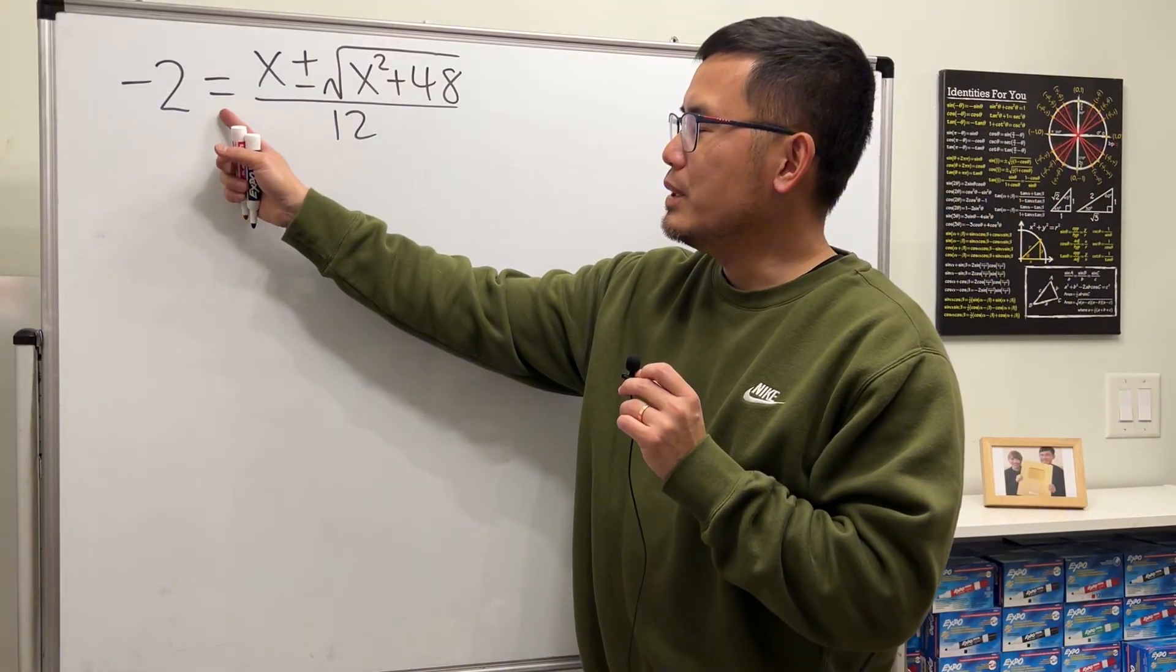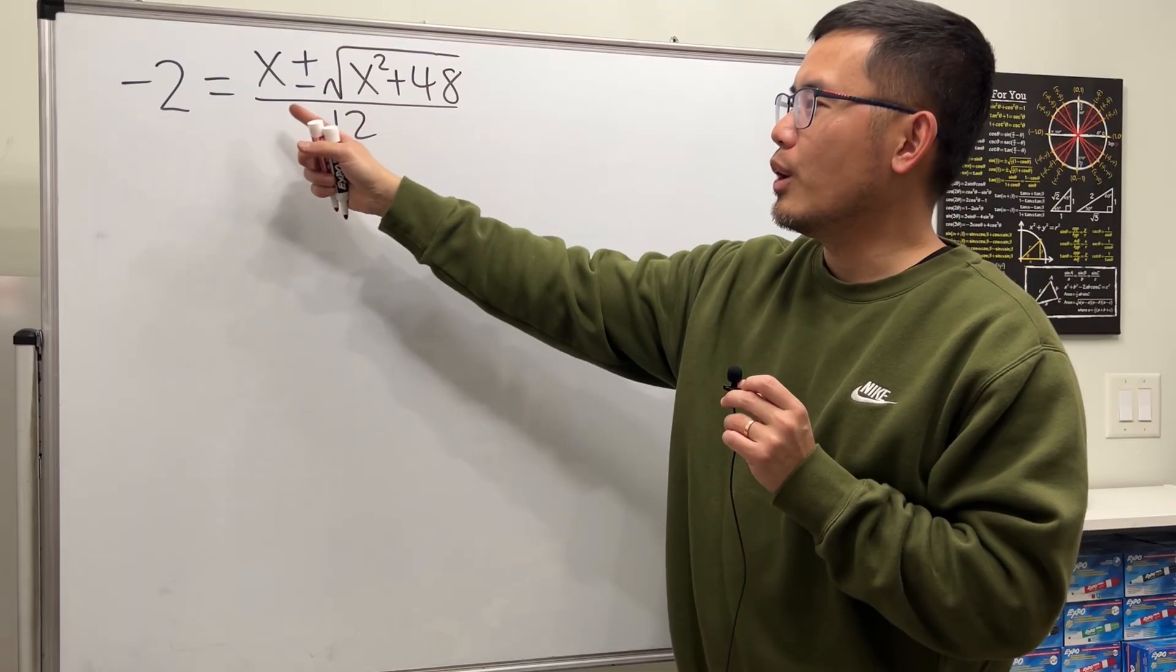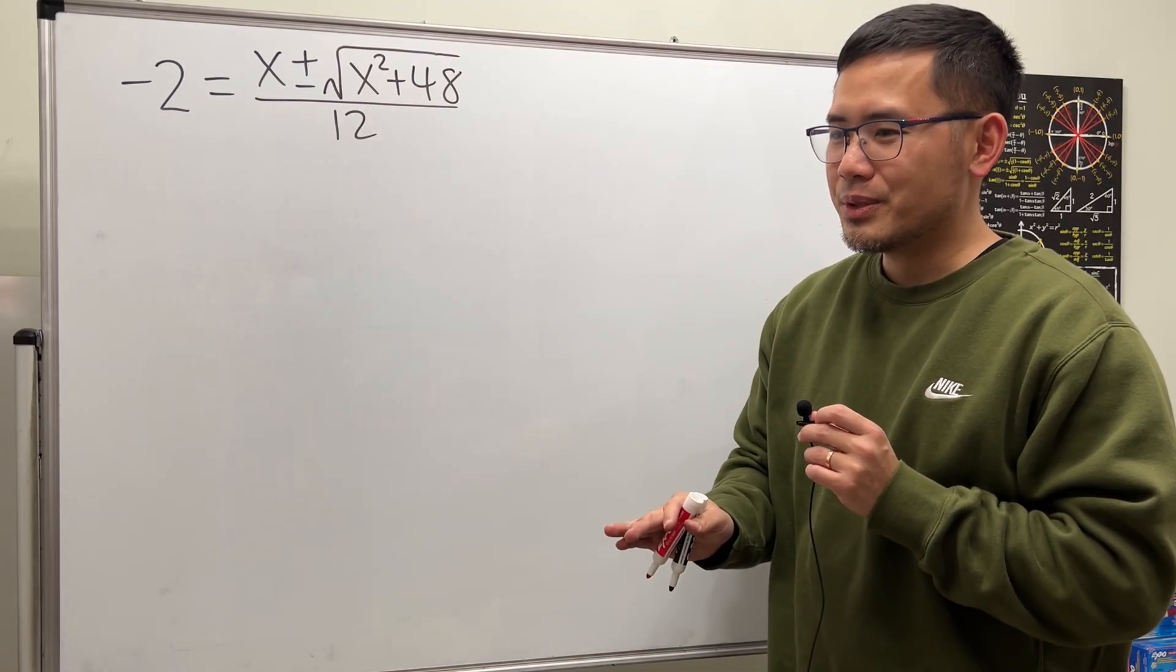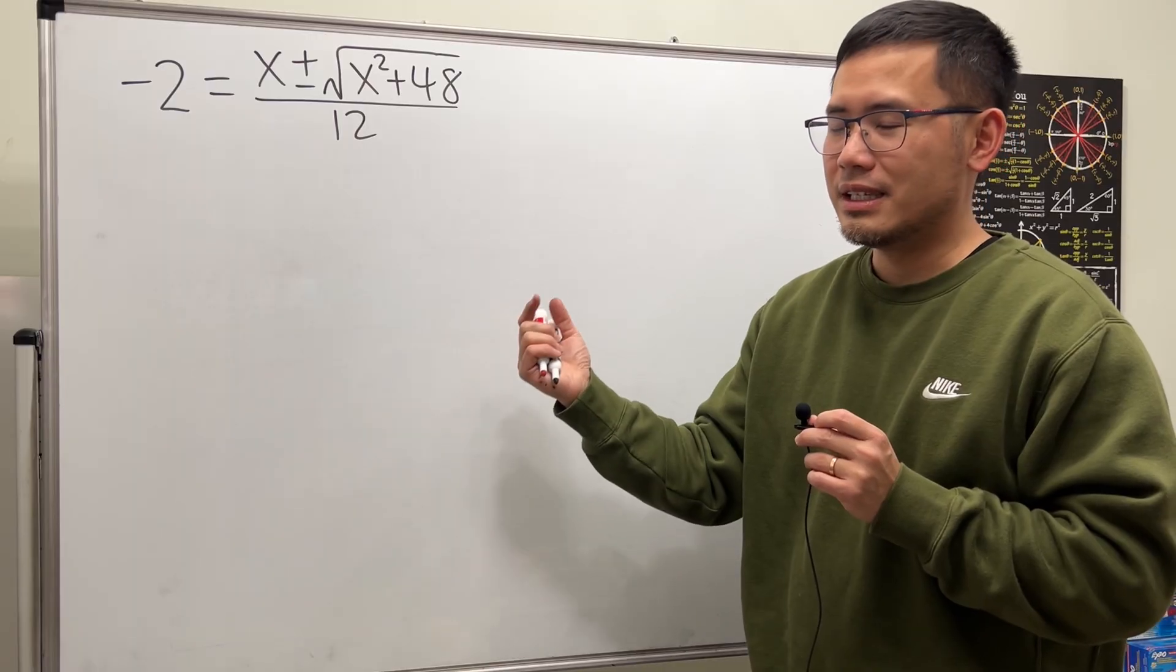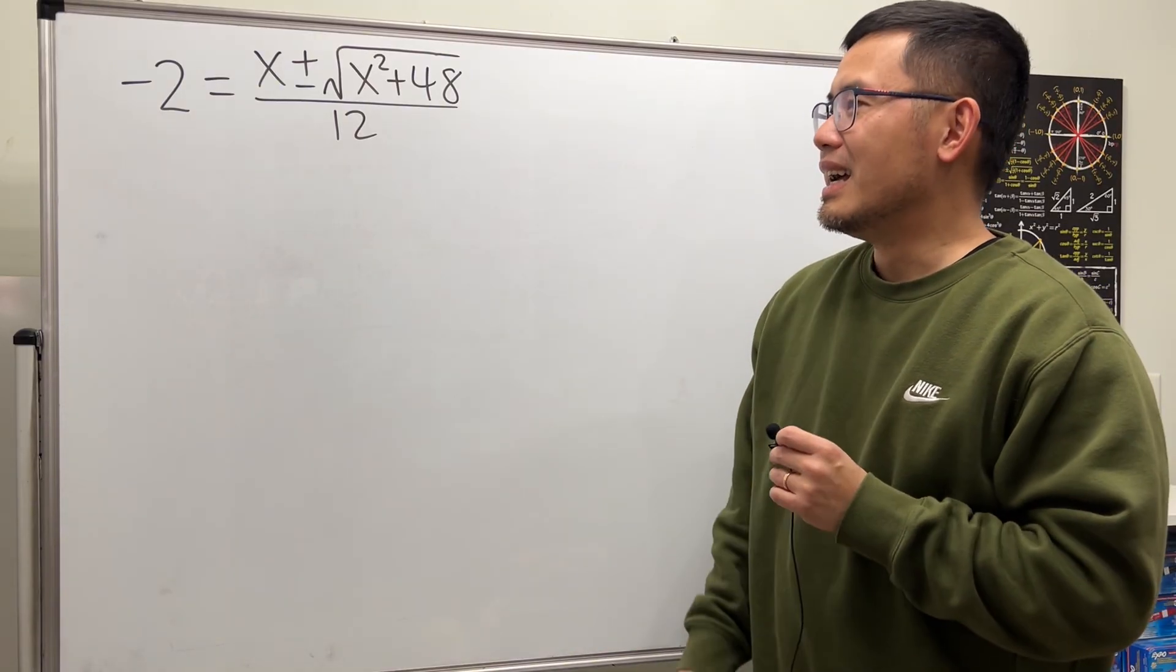We have negative 2 equals x plus or minus square root of x squared plus 48 over 12. I'm just going to solve it first, and then later on I will show you perhaps the better way.